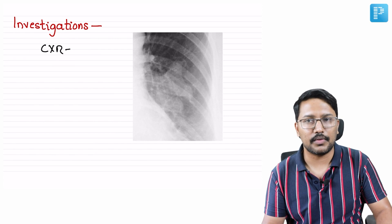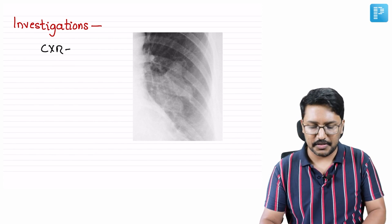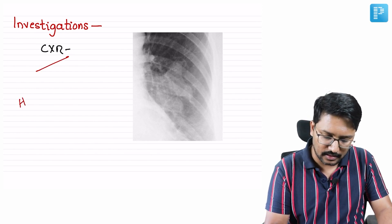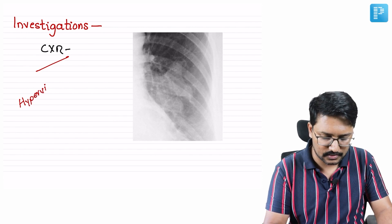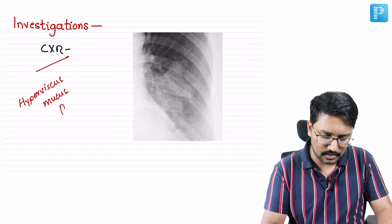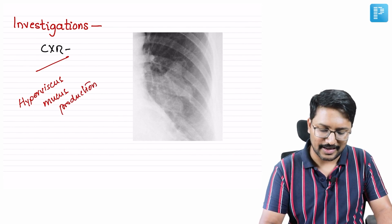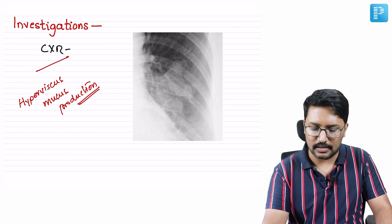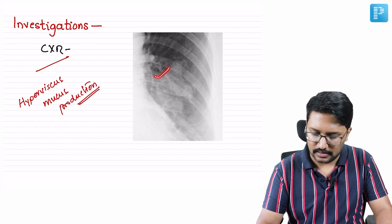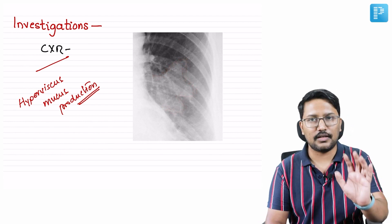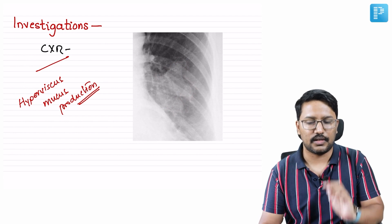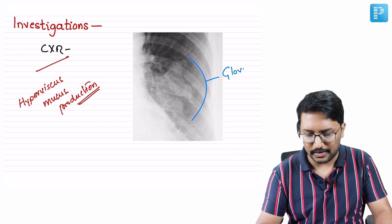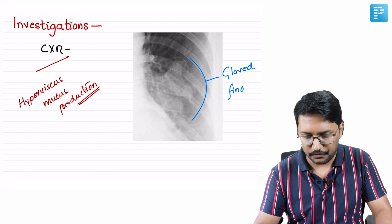On chest X-ray in a patient with ABPA, two findings are expected. In ABPA, there is an increased tendency to develop or secrete hyperviscous mucus, which tends to precipitate and settle in the airway. This deposition of mucus gives rise to a peculiar finding — tracing the outline in this image, it looks like fingers placed in a glove. This is known as the gloved finger sign.